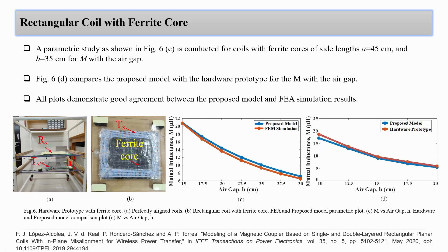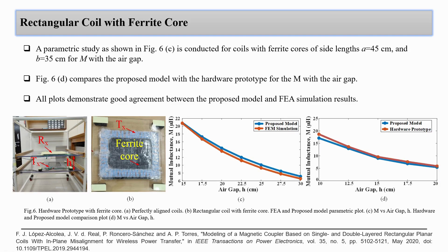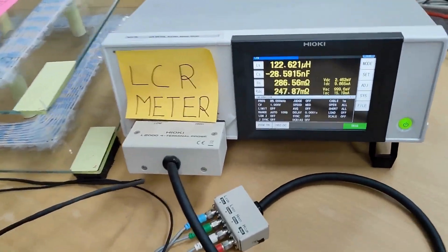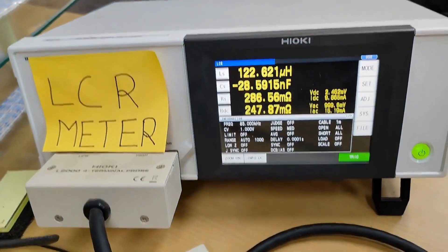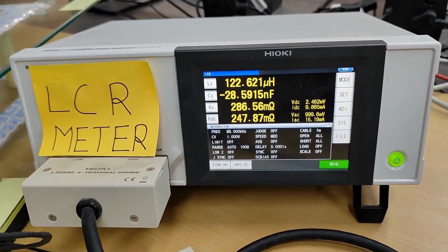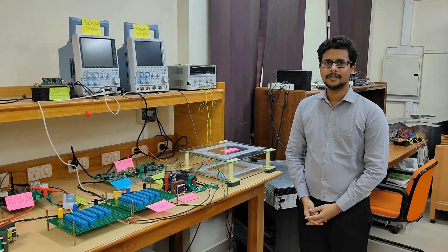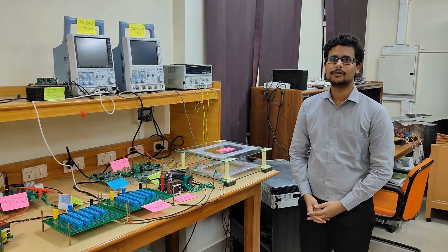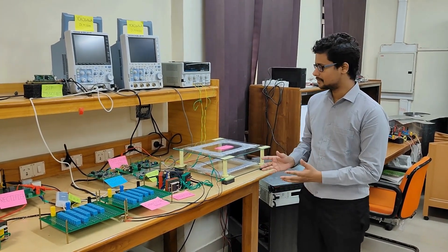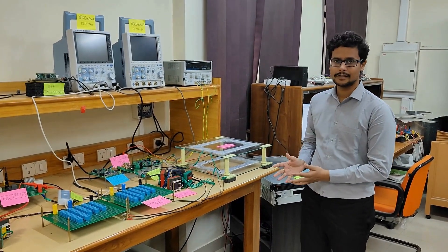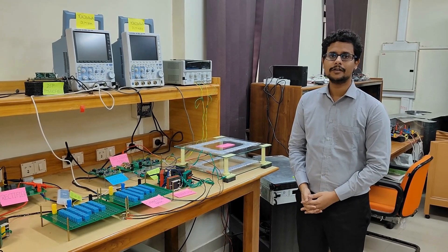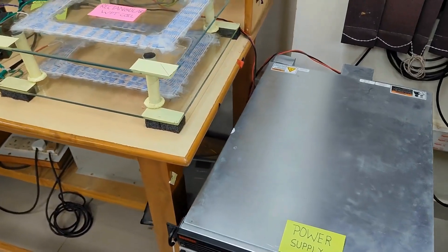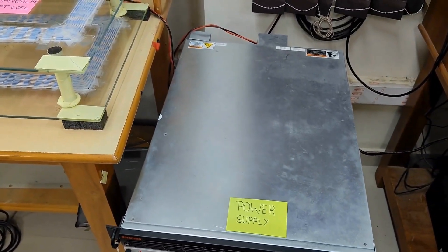Now we will see parameter measurement through an LCR meter. This is a Hioki LCR meter used to measure self and mutual inductance of the coil. On the screen we can see various parameter and setting options.